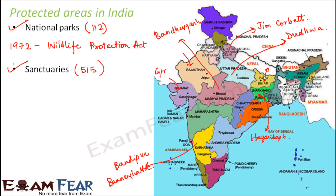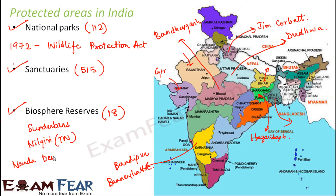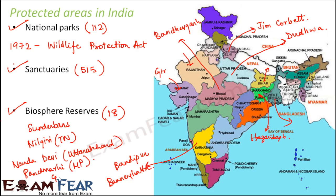The third type of protected area is the biosphere reserve. In India we have a total of 18 biosphere reserves. Examples include the Sundarbans Biosphere Reserve in West Bengal, Nilgiri Biosphere Reserve in Tamil Nadu, Nanda Devi Biosphere Reserve in Uttarakhand, Panchmari Biosphere Reserve in Madhya Pradesh, and the Great Nicobar Biosphere Reserve in the Andaman and Nicobar Islands.